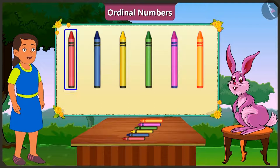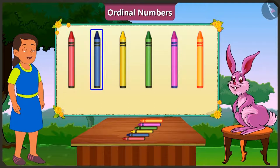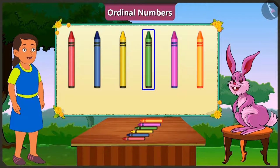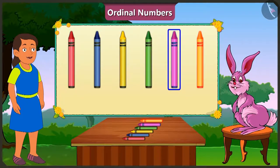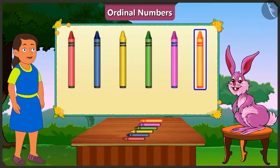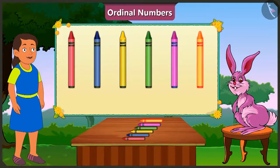Look here — the red crayon is at the first place, blue crayon at the second place, yellow crayon at the third place, green crayon at the fourth place, at the fifth place is the pink crayon, and at the sixth place is the orange crayon.